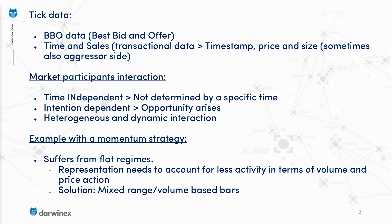Let's return to the foundations now. For us to have all the possible information, there is no doubt that we should start from tick data. I will leave aside the order book for the moment. Tick data can come in two flavors: the first is the best bid and offer data, commonly known as BBO, with their prices and size; and the second is transactional data, commonly known as time and sales. Having all the possible information in tick data doesn't mean all the information will finally become signal.